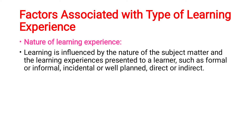Factors associated with the type of learning experiences. Under this, we have the nature of learning experiences. Learning is influenced by the nature of the subject matter and the experiences presented to the learner — such as formal and informal learning. Formal learning means a college or a particular program; informal education is day-to-day learning in an informal setup. Incidental learning is unplanned — suddenly, on the spot, you learn something new. Well-planned means learning that was already scheduled. It can also be direct or indirect in content or method of teaching.